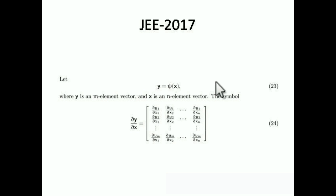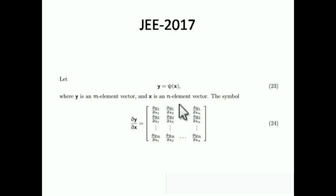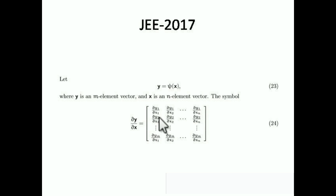This is a very rare thing but I'm going to cover it. If you have a matrix — say y is an m-element column vector and x is an n-element row vector — the symbol dy/dx can be represented starting with dy1/dx1, dy2/dx1, up to dym/dx1. You can see here y is a column vector and x is a row vector with n elements.